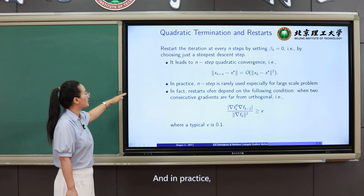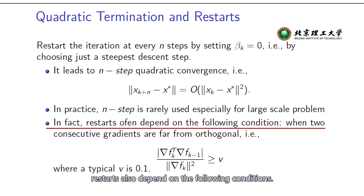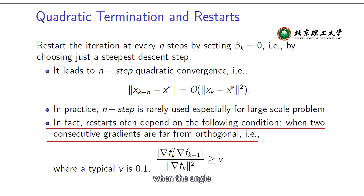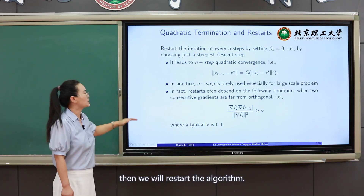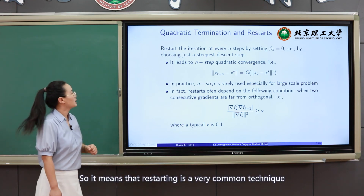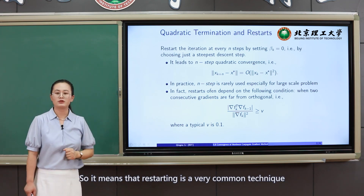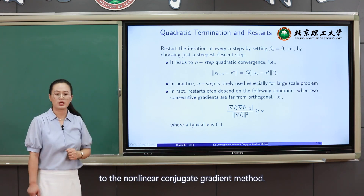In practice, n-step restarting is especially useful for large-scale problems. Restarts also depend on the following condition: for example, when the angle between the successive two gradients over the norm of the current gradient exceeds a threshold, we restart the algorithm. Restarting is a very common technique for the nonlinear conjugate gradient method.